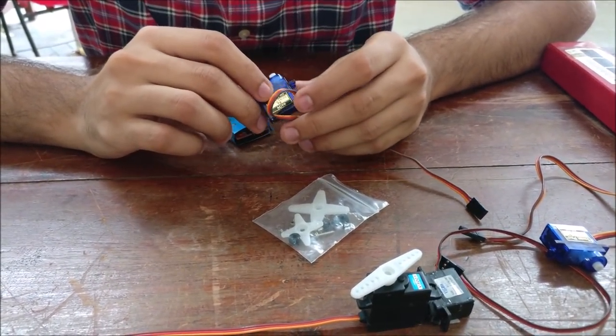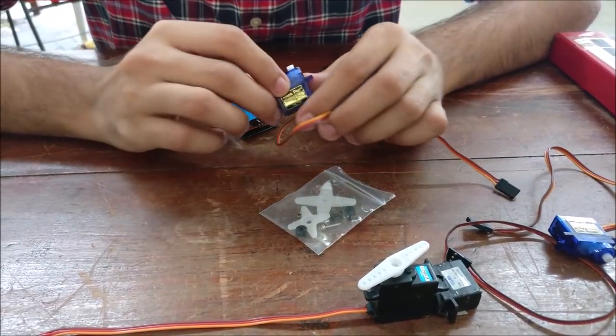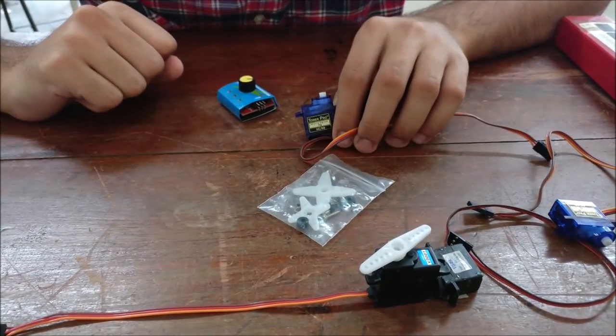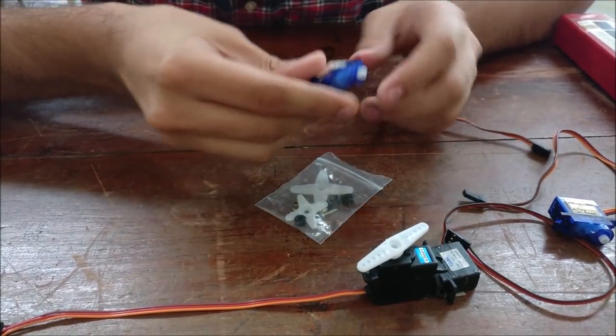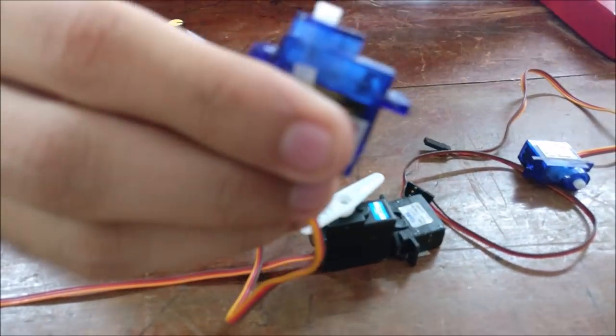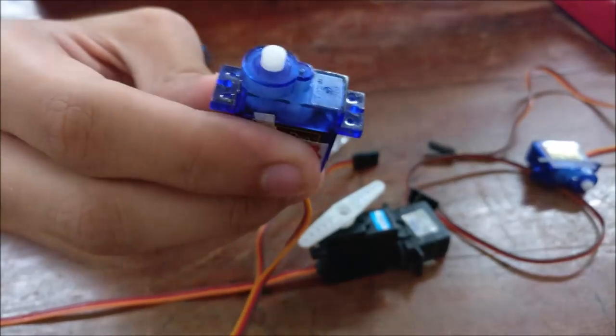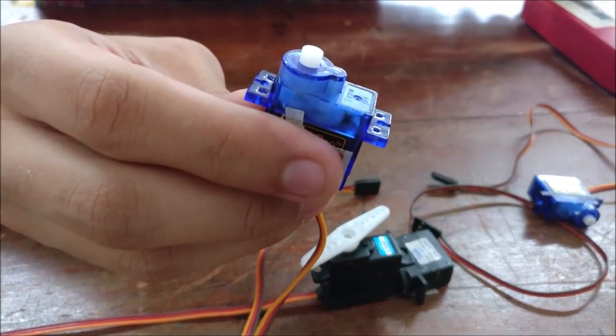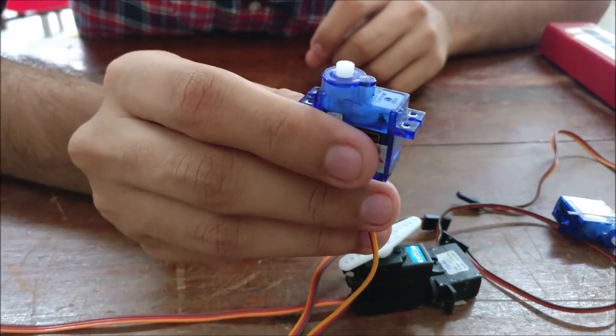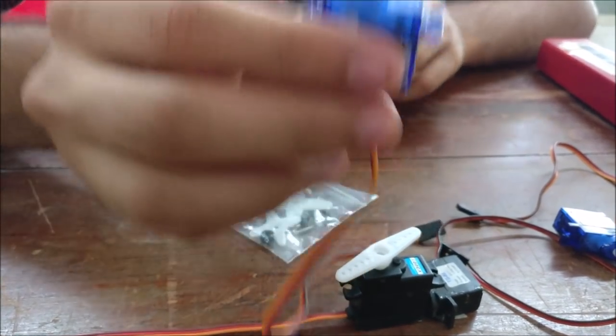The control line is used to position the servo. The servo motor comes in different sizes which affect the overall size of the servo. It mainly consists of gears as you can see here, the inside. The amount of power applied to the motor is proportional to the distance it needs to travel. So if the shaft needs to turn a large distance, the motor will run at full speed.